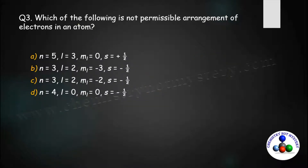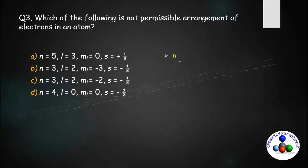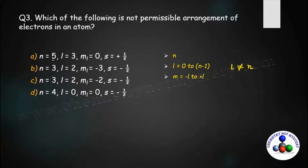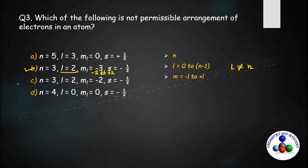Next question: which of the following is not a permissible arrangement of electrons in an atom? Let's revise the rules: for a given value of n, l ranges from 0 to n minus 1, so l can never equal n. Also, m ranges from minus l to plus l. Examining the options: for n=5, l=3, m=0 — valid. For n=3, l=2, m cannot be minus 3 because m must range from minus 2 to plus 2. So option D is not permissible.